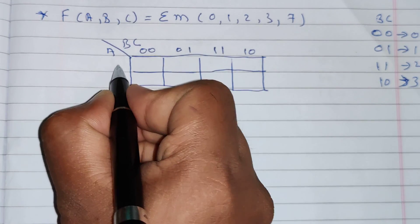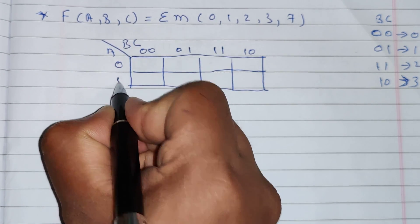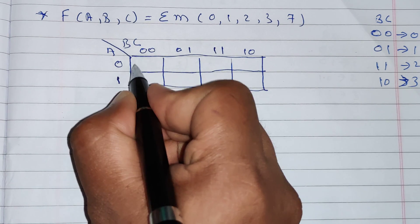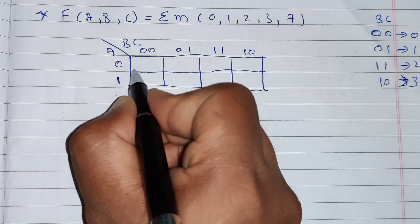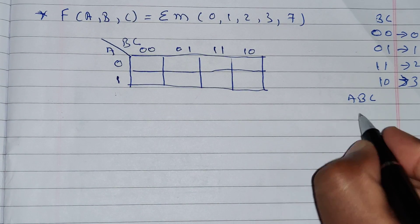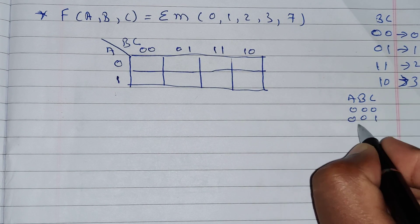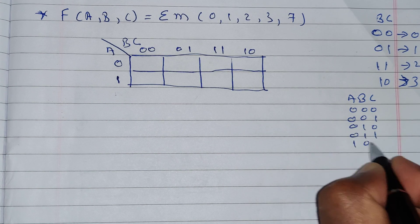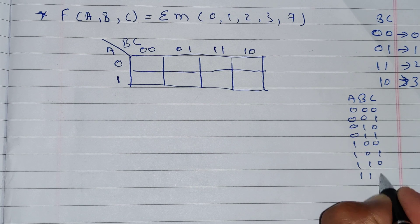Now let's write the values of the cells. These empty boxes are called cells. For three variables A, B, C, the combinations are: 000, 001, 010, 011, 100, 101, 110, and 111.